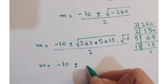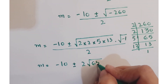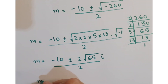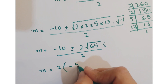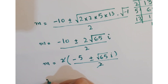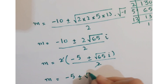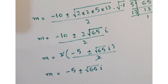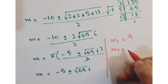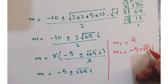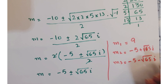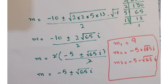So m = (−10 ± 2√65 · i) / 2. Taking out 2 as common, this 2 gets cancelled, giving m = −5 ± √65 · i. So the three solutions of m are: m₁ = 9, m₂ = −5 + √65·i, and m₃ = −5 − √65·i. These are the solutions for this cubic equation.